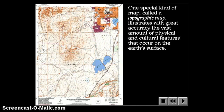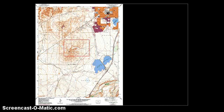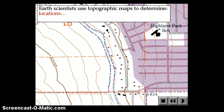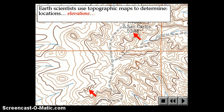One special kind of map, called a topographic map, illustrates with great accuracy the vast amount of physical and cultural features on the Earth's surface. Topographic maps are really the workhorse of geoscientists — a detailed, scaled, overhead representation of the Earth's surface, very valuable for geologic and land use studies, land use planning, and constructing buildings, bridges, and highways. Earth scientists use them a lot because they include very precise locations, and they show elevations — height above sea level — indicated by brown contour lines and specific elevation points.